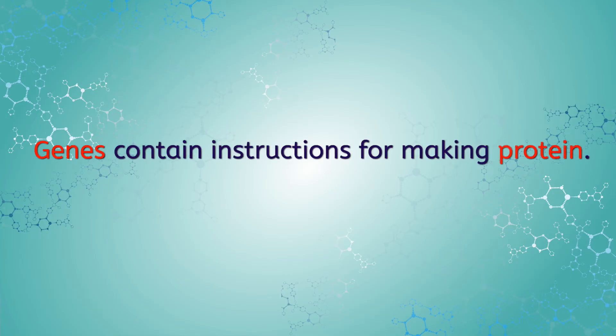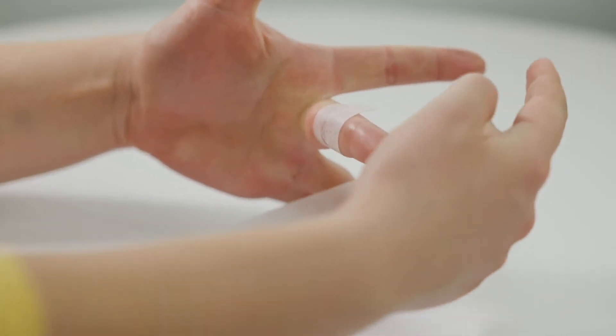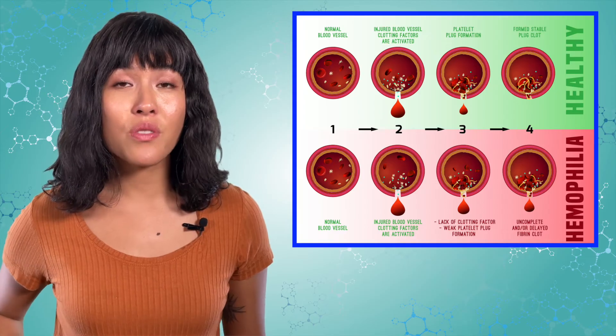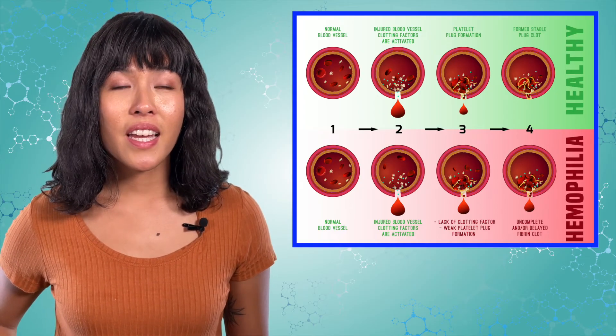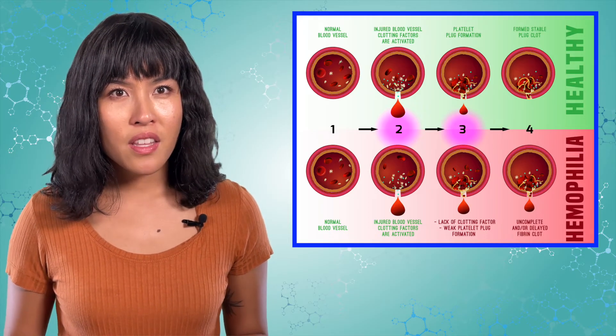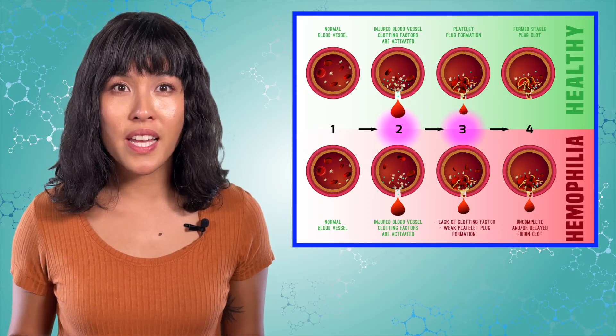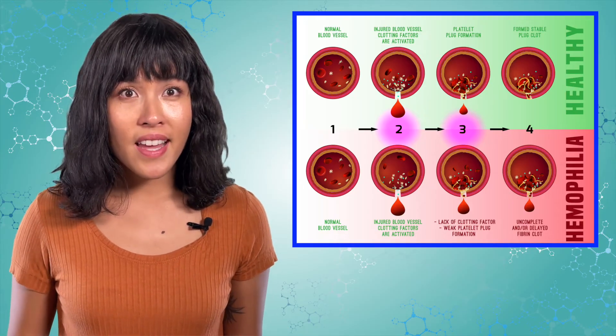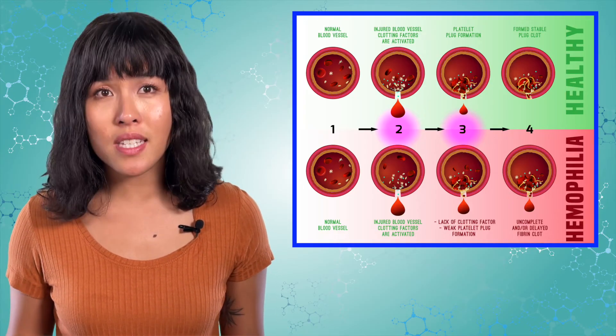All genes contain instructions for making proteins, a type of molecule you'll learn about more in the next unit. But what if you inherited a mutated copy of this gene from your parents? This can cause low levels of the clotting factor to be produced, such that your body can't stop the bleeding as quickly. This is a condition called hemophilia. The clotting factors are activated in step two, but starting with step three, the clot isn't able to form properly, and the bleeding will continue in step four.